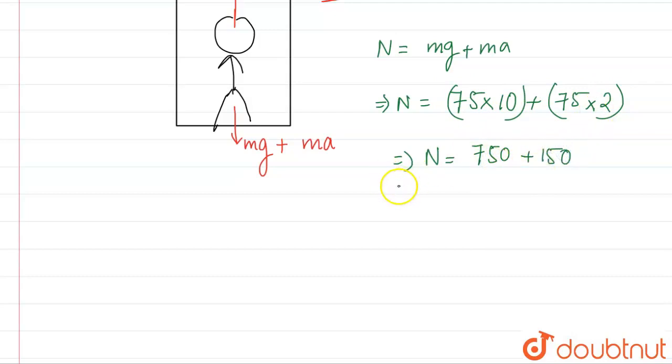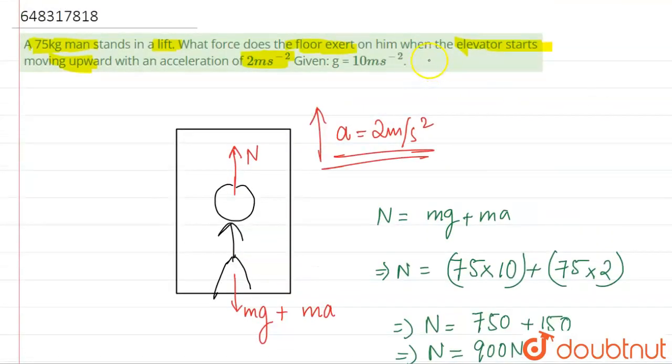So this will become 750 plus 150. So N will be equal to 900 Newton. So our answer will be 900 Newton. Got it? Thank you.